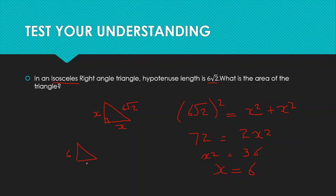We have a triangle where both equal sides are 6 and the hypotenuse is 600√2. To find the area: area equals half multiplied by base multiplied by height. The base is 6 and the height is also 6, so area equals half × 6 × 6 = 36 ÷ 2 = 18. So the area of the triangle is 18.